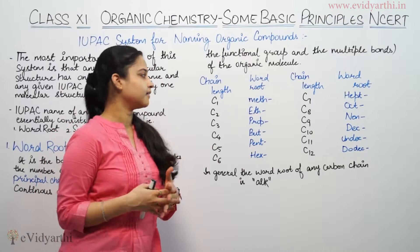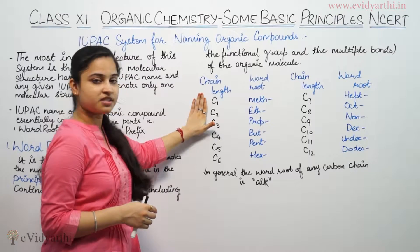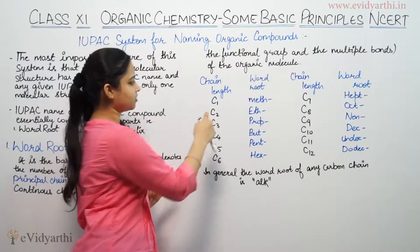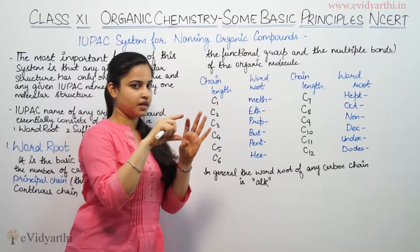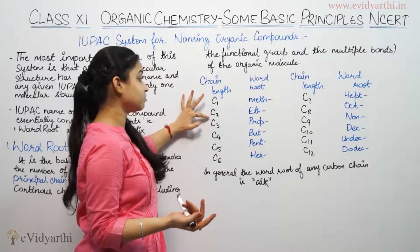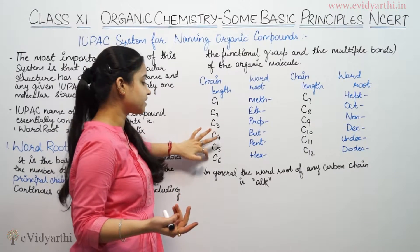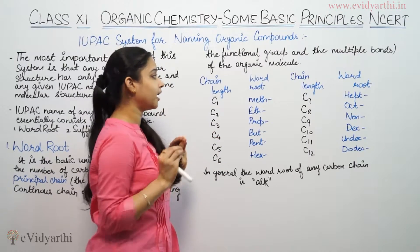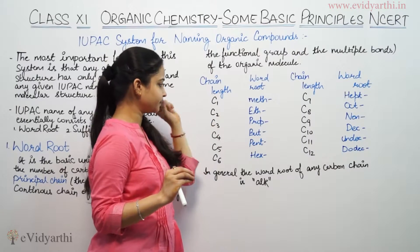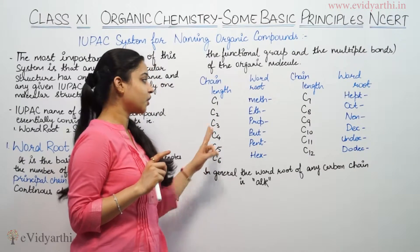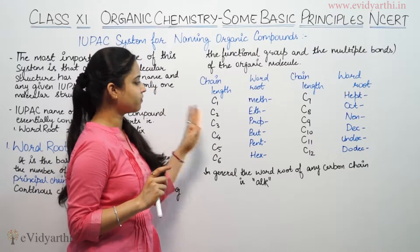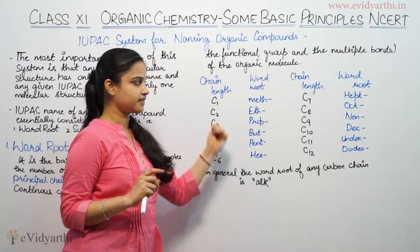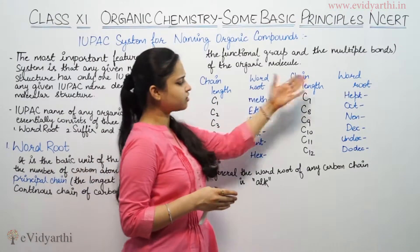So how will the word root be named based on the number of carbon atoms in the principal chain? If we have one carbon atom, then the word root is 'meth'. If there are two carbon atoms, the word root is 'eth'. If there are three carbon atoms, the word root is 'prop'. Then four is 'but', five is 'pent', six is 'hex', seven is 'hept', eight is 'oct', and so on.